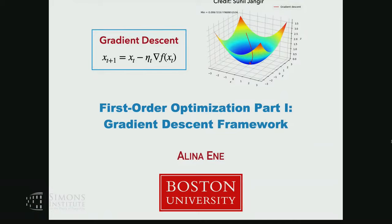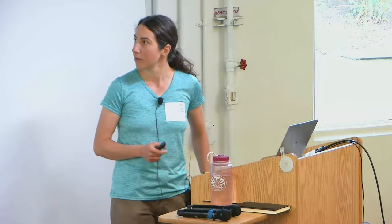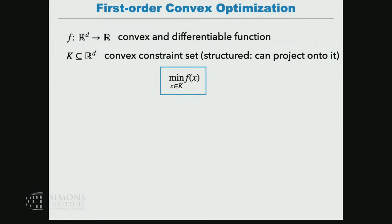Thanks, Aaron, for the very generous introduction. And thanks to everyone who woke up early to come, and everyone who might be listening online. As Aaron mentioned, I'm delighted to kick-start our discussion of optimization with first-order methods, so things like gradient descent. Let me set up the basic problem, which I'm sure many of you have seen before. In this talk, we're going to look at the basic problem of convex minimization. We have some objective function f in d dimensions, which could be quite high dimensional, and we're going to assume it's convex.